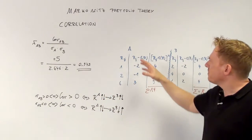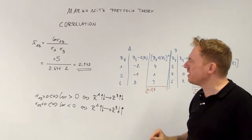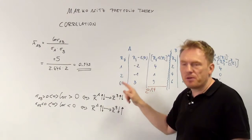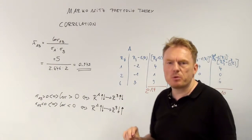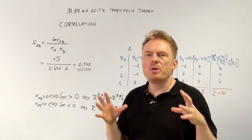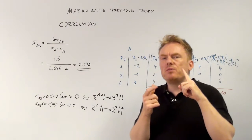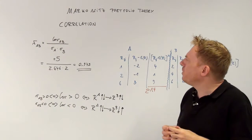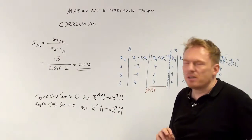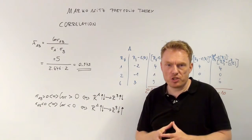We looked at this example — Example A — where we have two different shares. Share A with 1%, 2%, and 6% over three different situations: first month, second month, and third month. Share B has 2%, 4%, and 6%. We need to compute the expected values and standard deviations, which we already calculated: 2.646% as the standard deviation of Share A and 2% as the standard deviation of Share B.